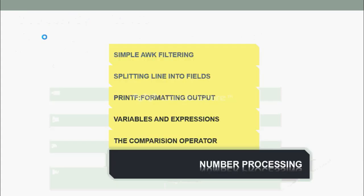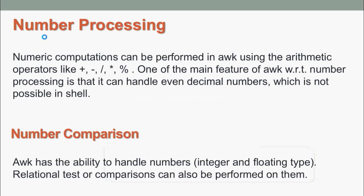Next, we are going to see number processing. Numeric computation can be performed in AWK using arithmetic operators like plus, minus, division, multiplication, modulus. One of the main features of AWK with respect to number processing is that it can handle even decimal numbers, which is not possible in shell. AWK has the ability to handle numbers, both integer type as well as floating type. Relation tests or comparisons can also be performed on them.